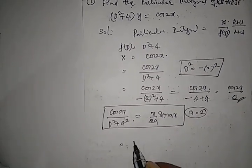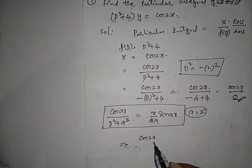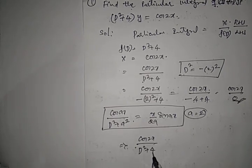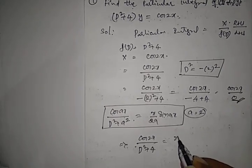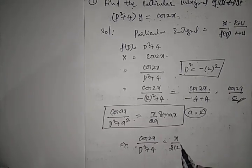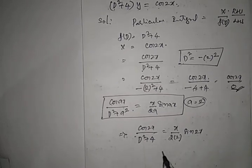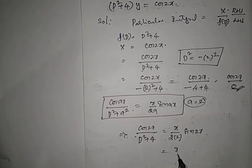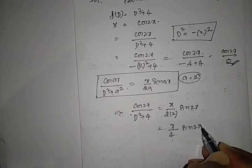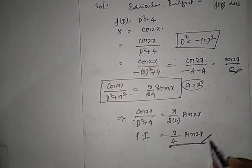Substituting a = 2 into the formula: cos 2x / (D² + 4) = x/(2·2) · sin 2x = x/4 · sin 2x. Therefore, the particular integral of the given equation is x·sin(2x)/4.